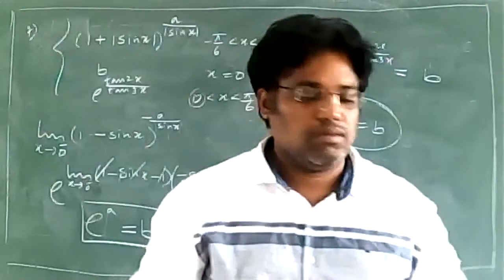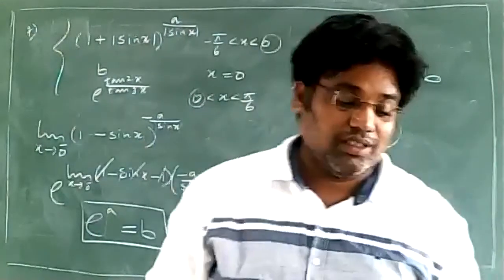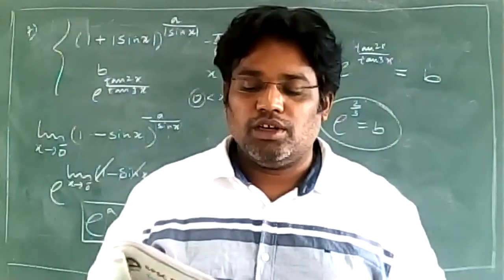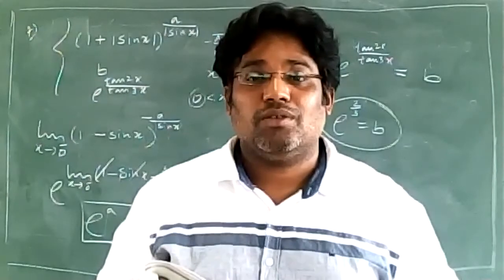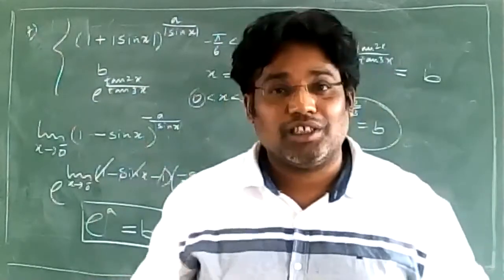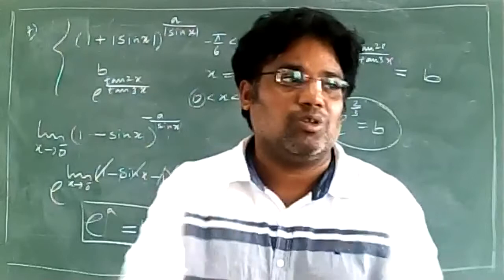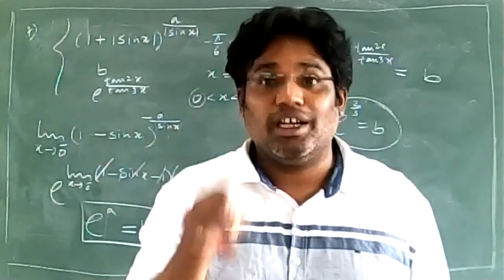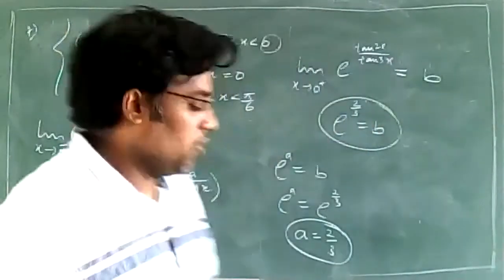Coming to question number 9: the function f(x) equals the step function of cos x. Step functions are discontinuous at all integral points. The option asks whether it is continuous at x equals pi by 2 — cos(pi/2) equals 0, which is an integral point, so the function is discontinuous there.